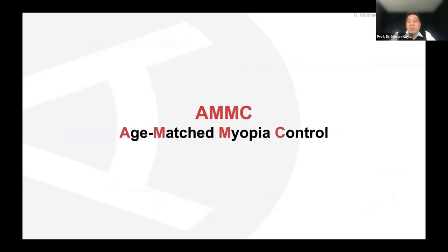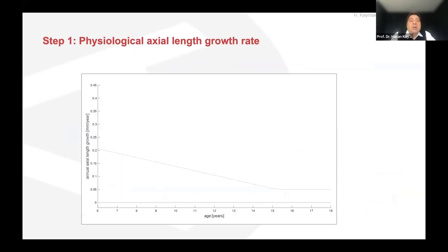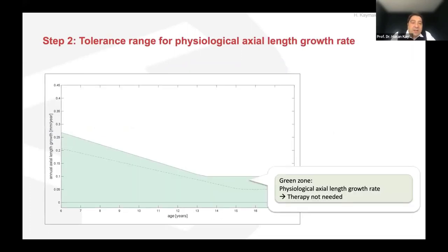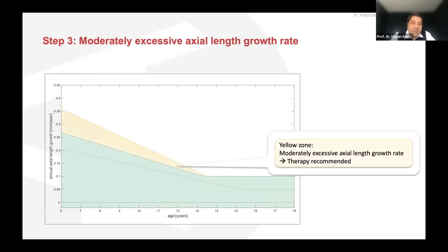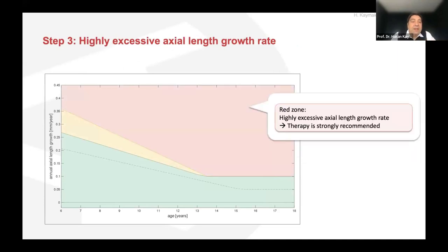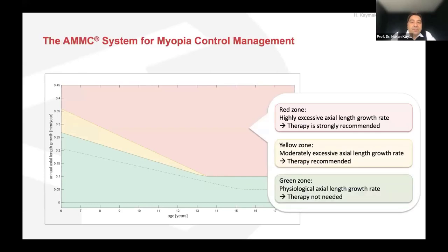AMMC works in steps. First, the physiological axial length growth rate plus standard deviation defines the green zone — therapy not needed, this is normal. Then the yellow zone: moderately excessive axial length growth rate — therapy recommended. Finally the red zone: highly excessive axial length growth rate — therapy strongly recommended. Red, yellow, green. Keep it simple. This traffic light system is the framework for myopia control management.